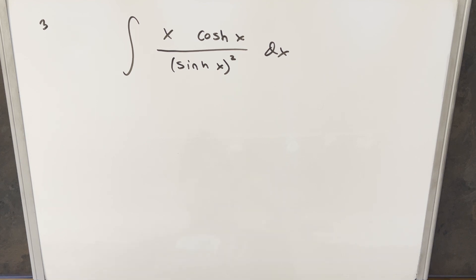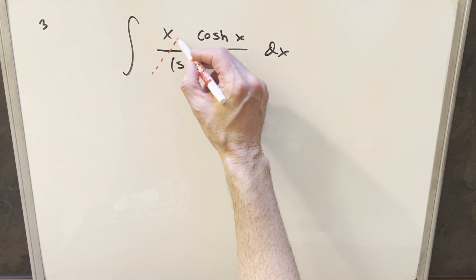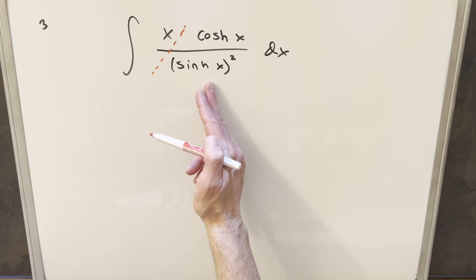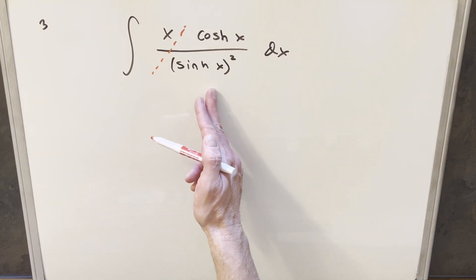The first thing I noticed with this one, if I kind of draw a little line here and separate this, everything over on the right, just this cosh x over sinh x squared, this is actually a pretty easy integral.